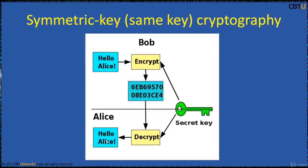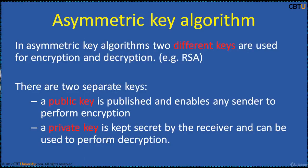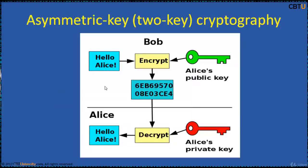Asymmetric key algorithm: in asymmetric key algorithms, two different keys are used for encryption and decryption. An example is RSA. There are two separate keys: a public key, which is published and enables any sender to perform encryption, and a private key, which is kept secret by the receiver and used to perform decryption. For example, Bob wants to send 'Hello Alice.' This is encrypted with Alice's public key. When Alice receives the message, she uses her private key to decrypt it. These two different keys are used, and she gets the message.